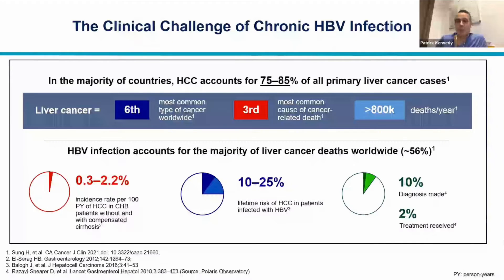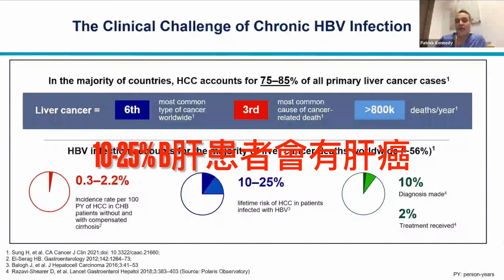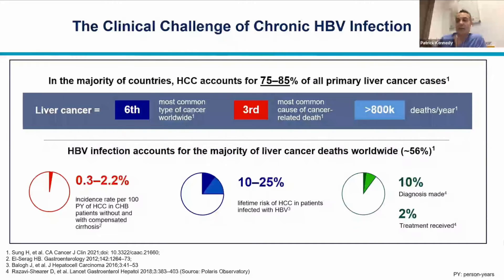Chronic hepatitis B results in about 800,000 deaths per year. Data from the Polaris Observatory show that the numbers of patients diagnosed and treated are far too small. Patients with chronic hepatitis B have a 10 to 25 percent lifetime risk for development of HCC — and this should be the springboard for how we change our approach to managing hepatitis B going forward.